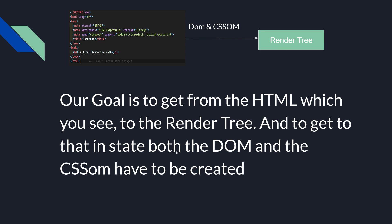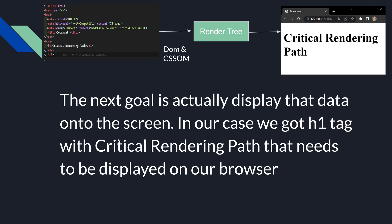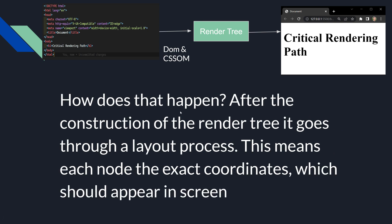To get to the render tree, both the DOM and the CSSOM have to be created. The next goal is actually displaying the data onto the screen. Once the render tree is created, we need to display it. In our case, the HTML has an h1 tag containing the content 'critical rendering path', which needs to be displayed on our browser. After the render tree is constructed, it goes through a layout process, and the last step is the painting process.